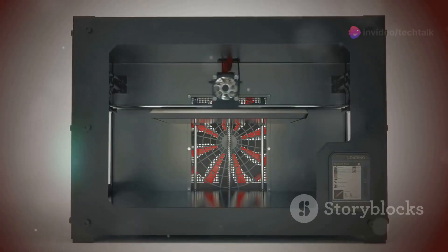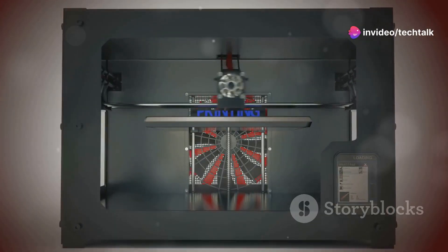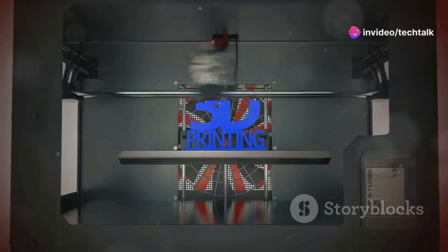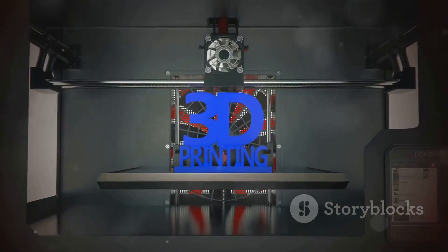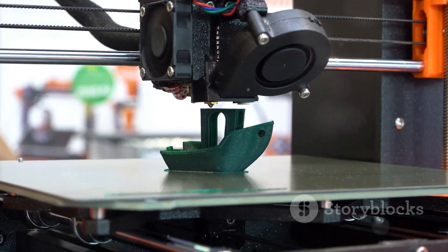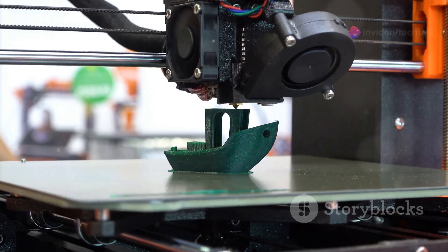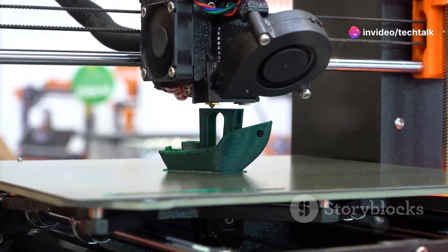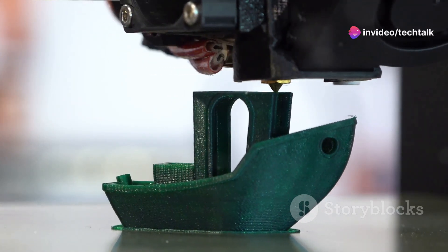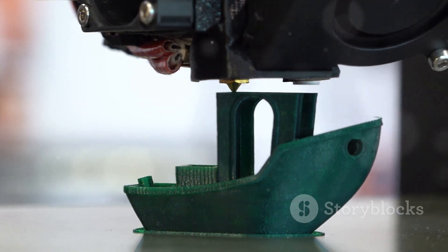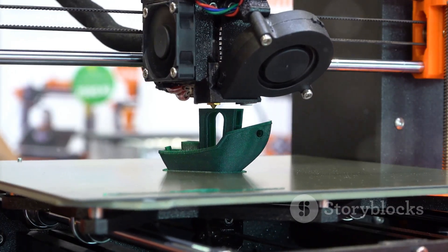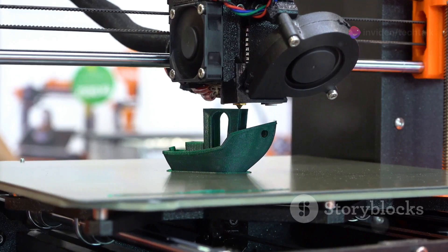One of the key advantages of 3D printing for production is its ability to create complex geometries that are impossible to manufacture using traditional methods. This opens up new design possibilities, allowing engineers to optimize products for performance, weight, and material usage. Moreover, 3D printing enables on-demand manufacturing, where products are produced only when needed. This eliminates the need for large inventories, reduces waste, and allows for mass customization.